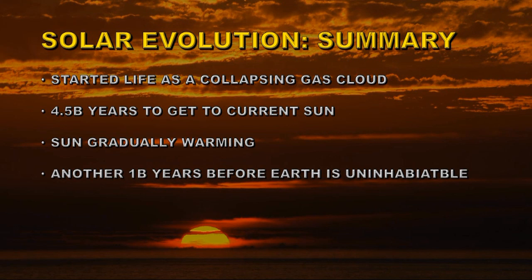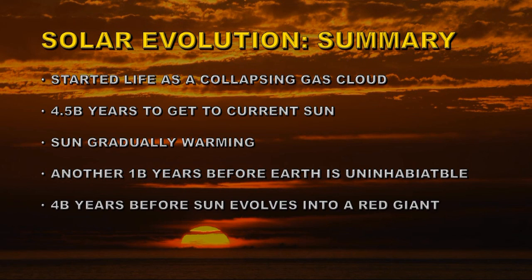In about another billion years, the warmth of the sun will have increased sufficiently that the Earth will move out of its Goldilocks zone and become uninhabitable. 4 billion years before the sun evolves into a red giant. And ends life as a fading white dwarf.